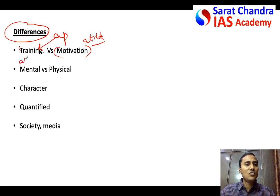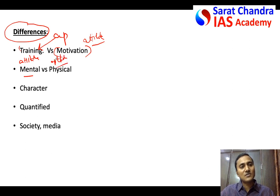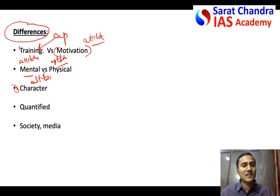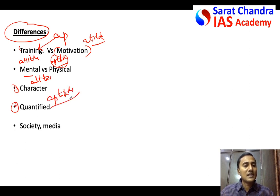Another difference: attitude is only mental — how you feel about objects or things is mental. Whereas aptitude is both physical as well as mental. Take a doctor — a doctor requires deep knowledge in medical science as well as the physical skills of surgery. That is another difference. Also, your attitude will tell your character. For example, my attitude towards women, elders, children, ideas, objects, and situations reveals my character. Whereas aptitude, being a skill, cannot tell about your character.